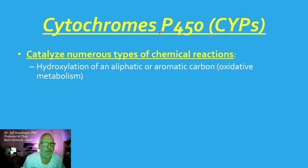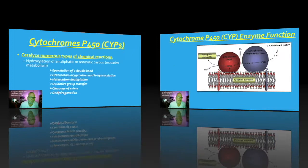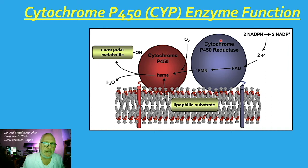Cytochrome P450 — you'll also see them as CYPs — catalyze numerous types of reactions, but the most common is hydroxylation of an aliphatic or aromatic carbon, commonly referred to as oxidative metabolism. These CYPs can do many other reactions. The cytochrome P450 enzyme always occurs as a pair with cytochrome P450 reductase.